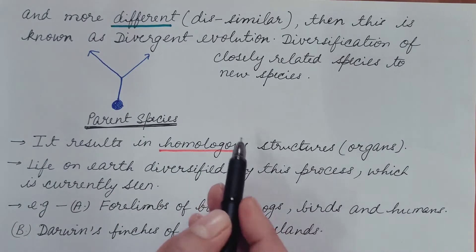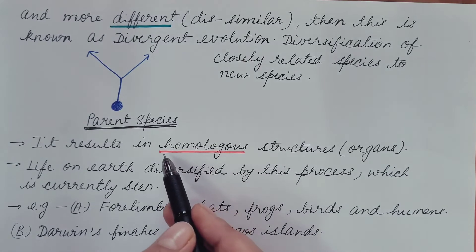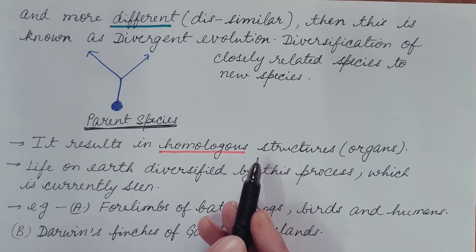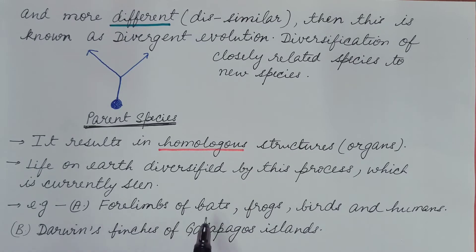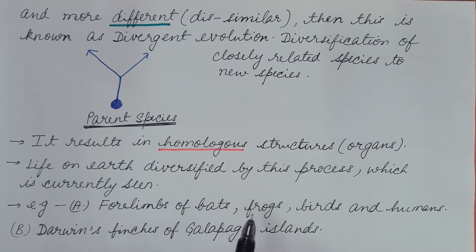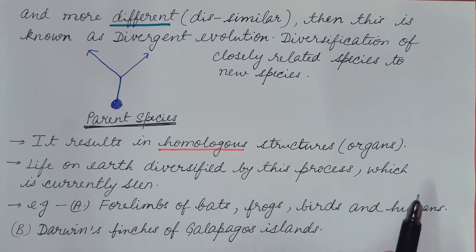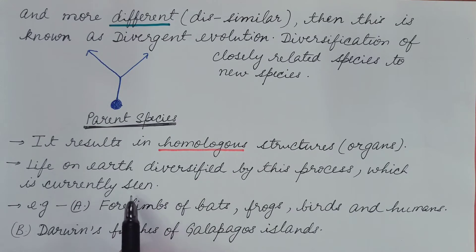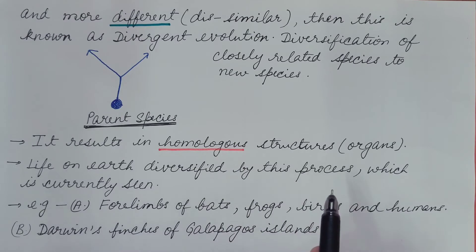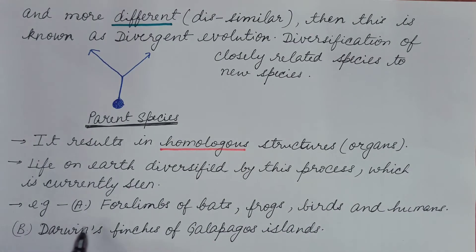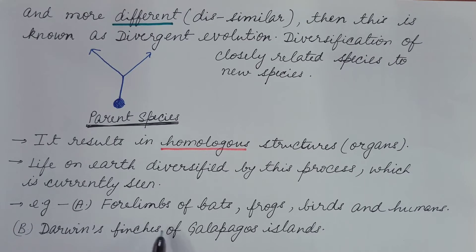Divergent evolution results in homologous structures — structures or organs which have different appearance and different functions, but similar origin and basic structure. An example is the four limbs of bats, frogs, birds, and humans: bats use their four limbs for flying, frogs for jumping, birds for flying, and humans for movement. Their appearance is also different, but they have similar basic structure and origin, showing that these evolved from common ancestors. Life on earth has diversified by this process of divergent evolution.